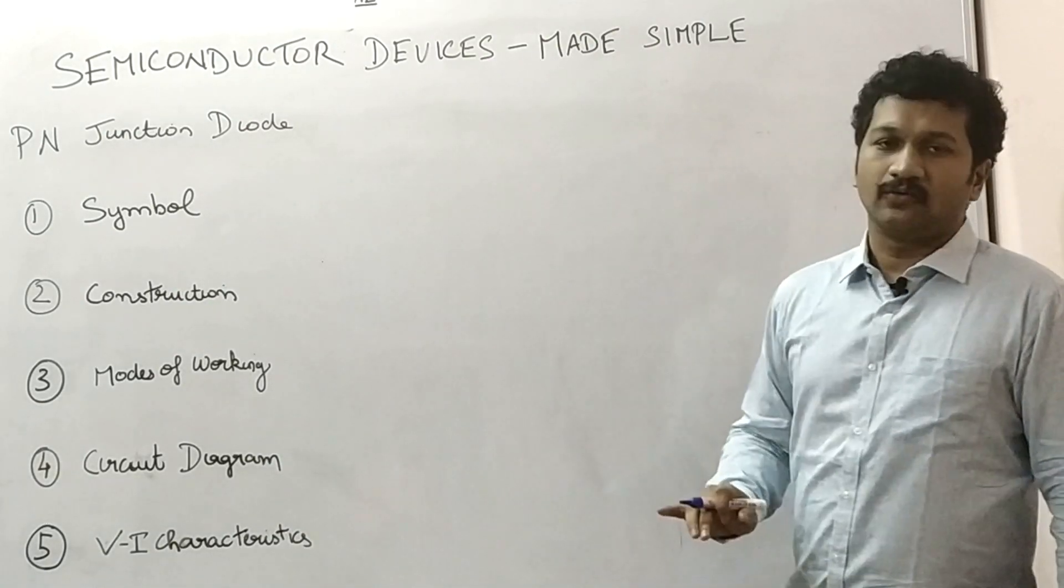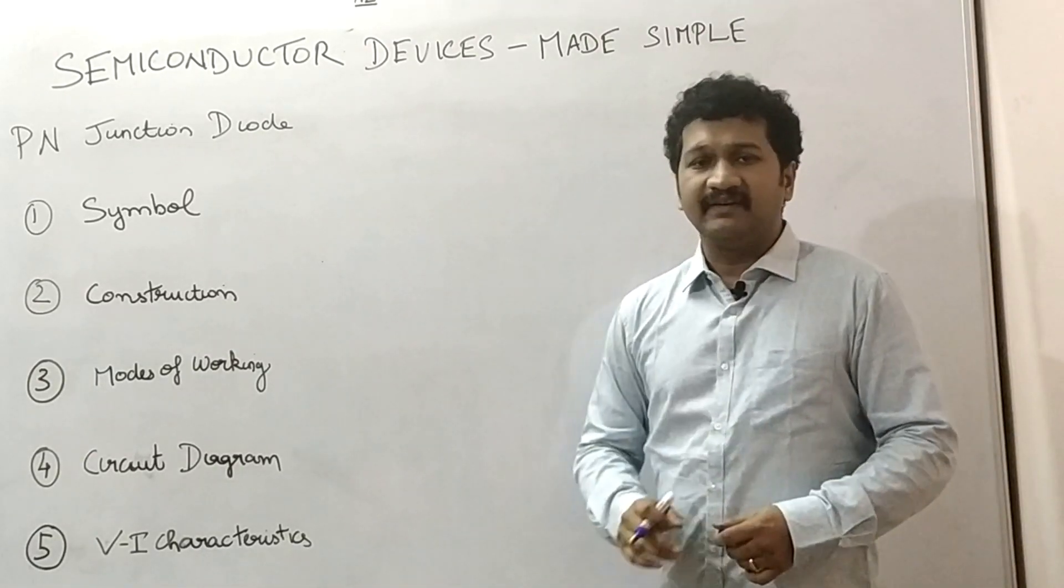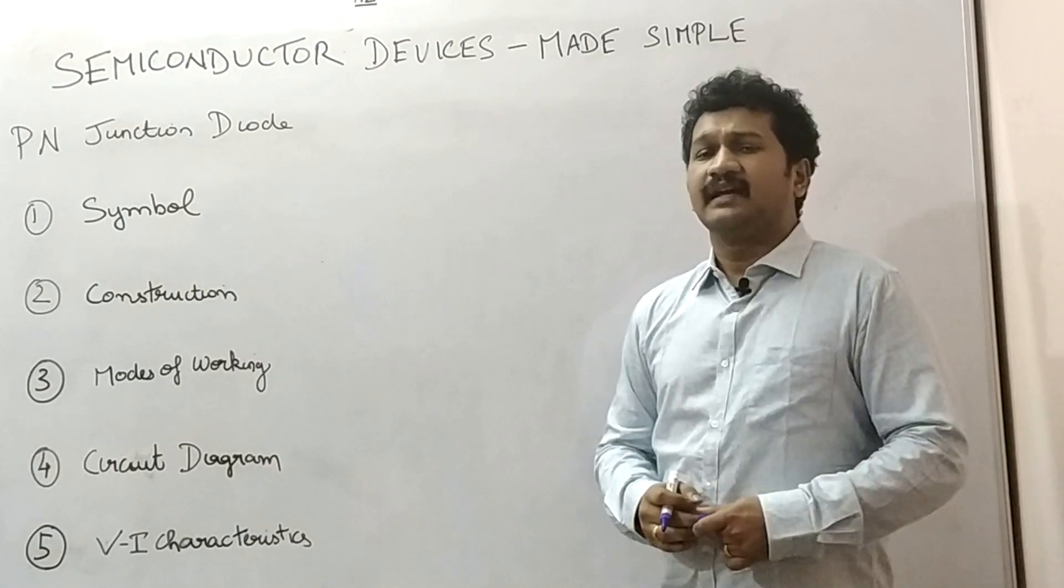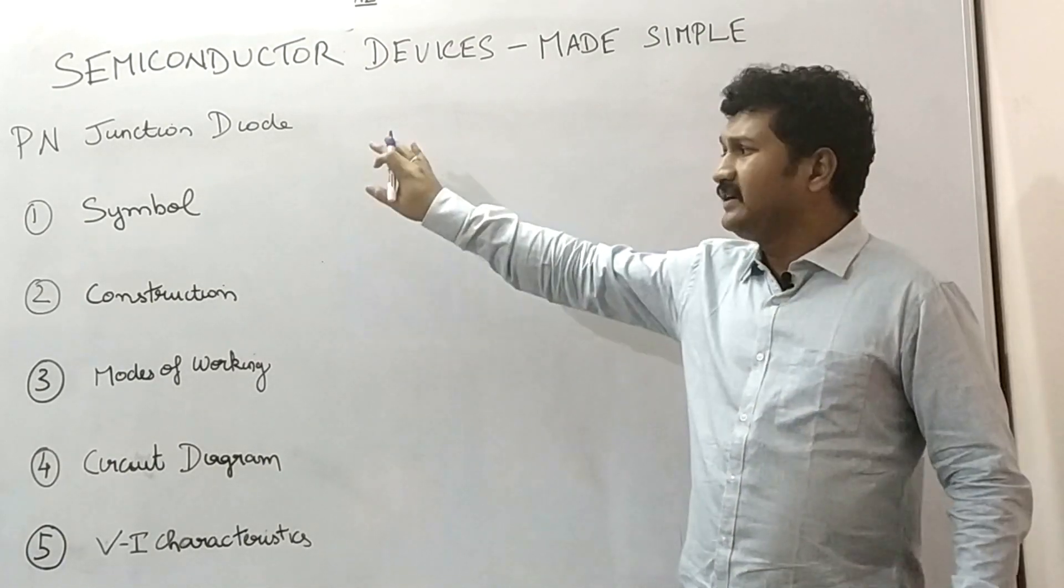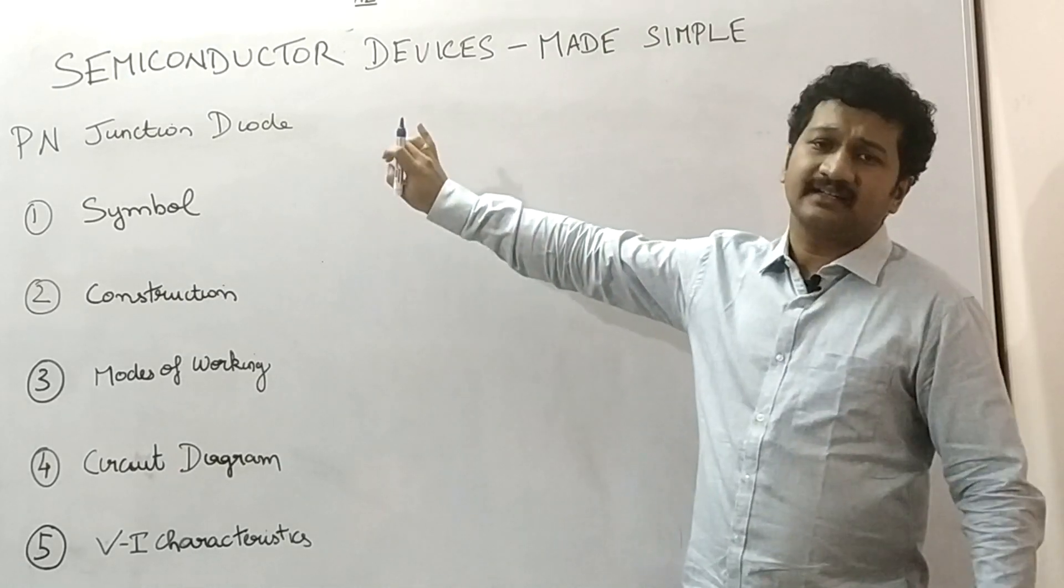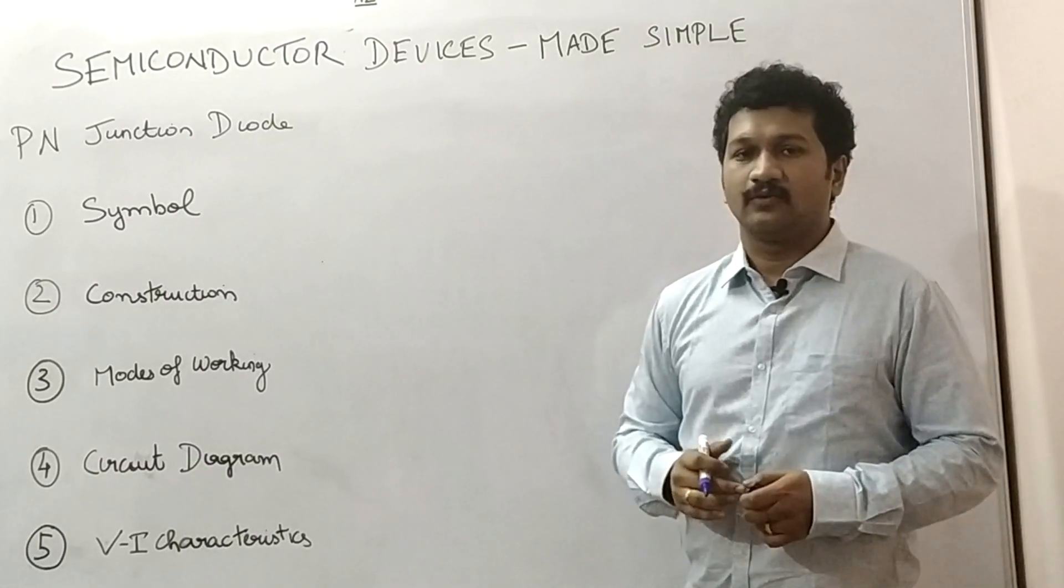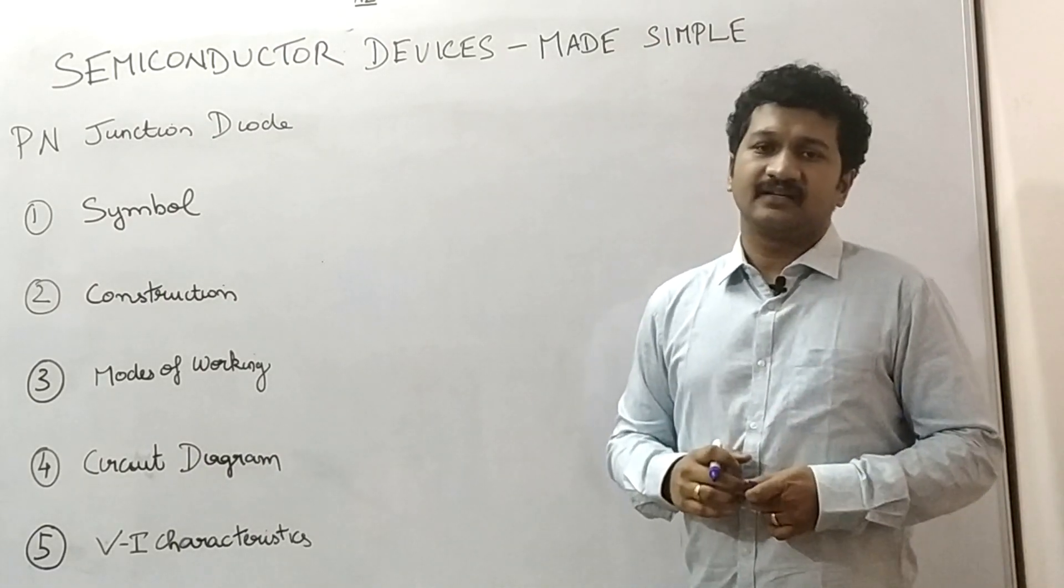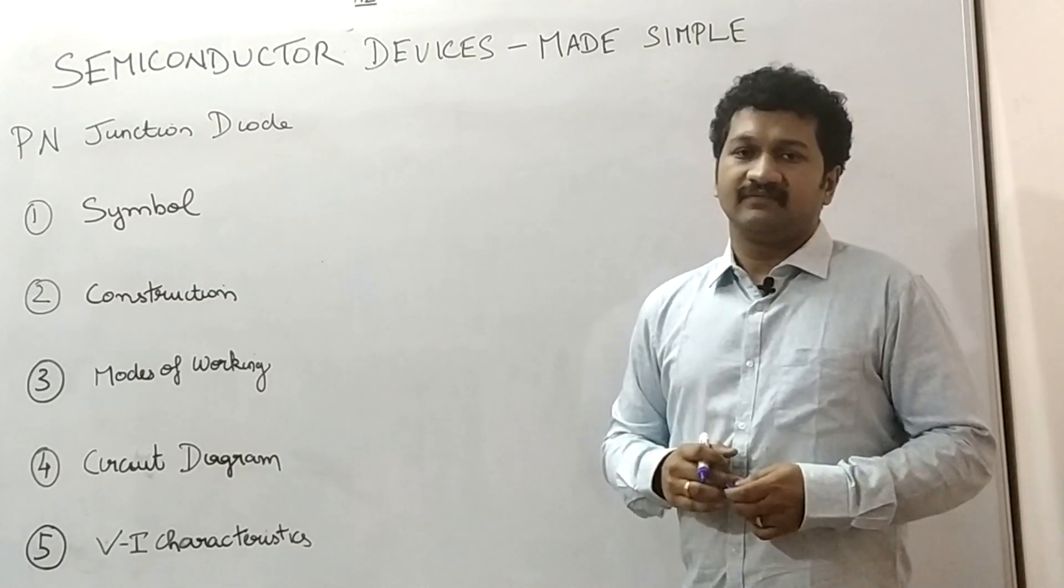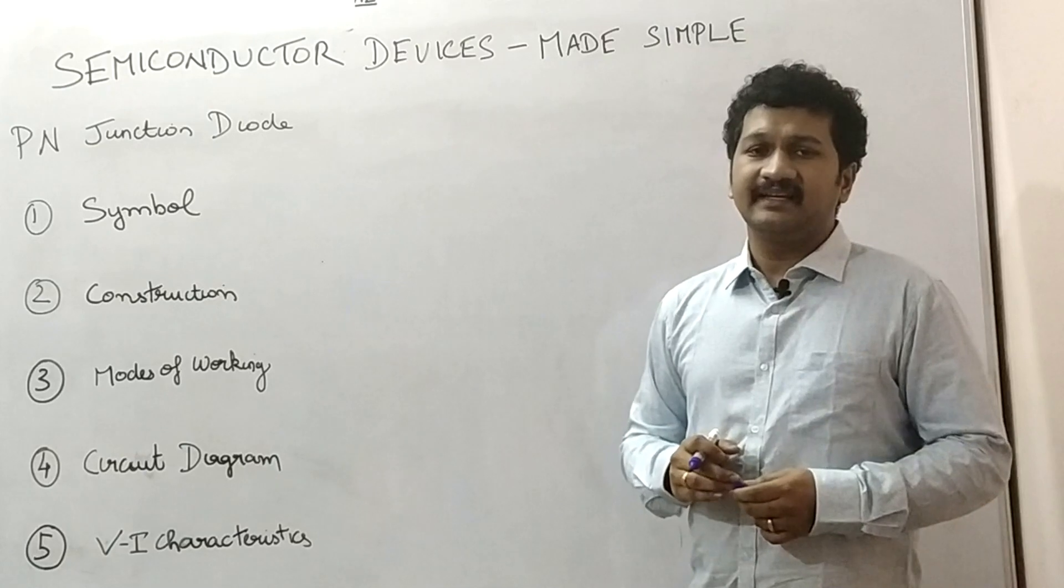We will start from PN junction diode. What is a PN junction diode? It is a semiconductor device which is able to conduct current in one direction. Unidirectional current is allowed to conduct in a PN junction diode. How will you operate a PN junction diode? Where will it be used? What are the applications of a PN junction diode? Everything we will be seeing in detail.